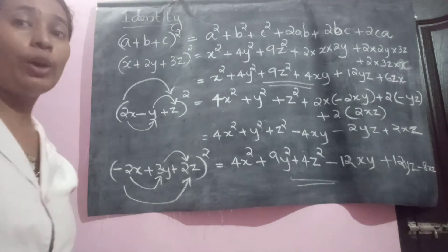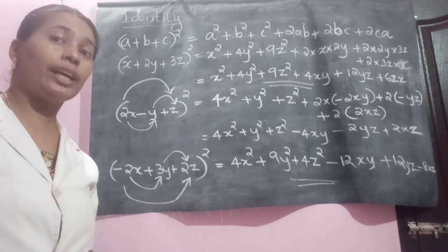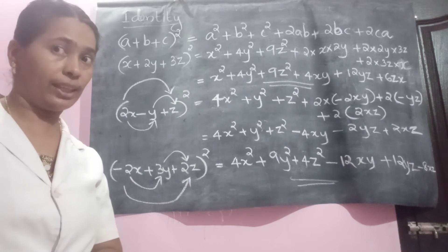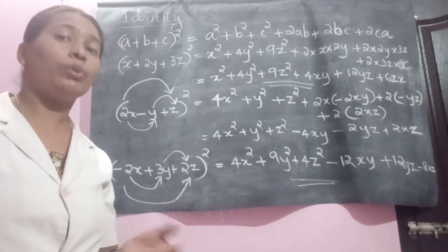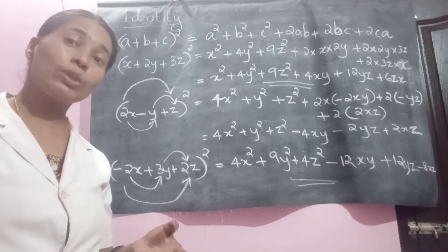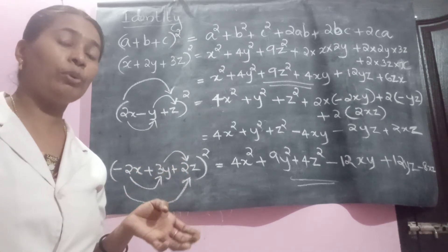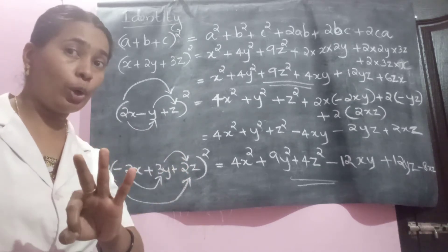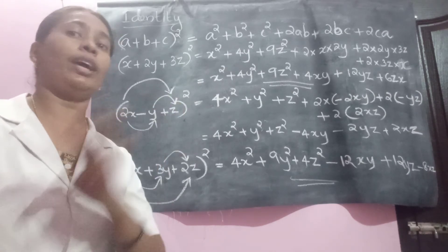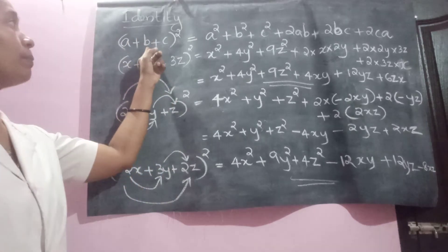Hi children, today we are going to study about a new identity that you haven't studied it. The new identity. Last year we have studied how to find square of A plus B or square of A minus B. Today we are going to study about how to find square of sum of three variables, three different variables. That is square of A plus B plus C.